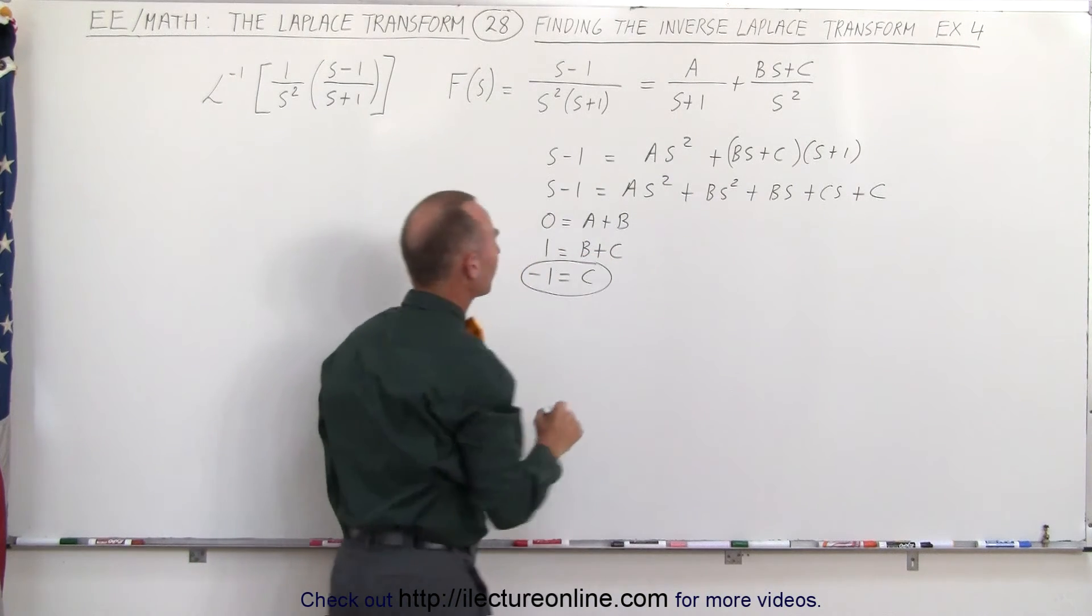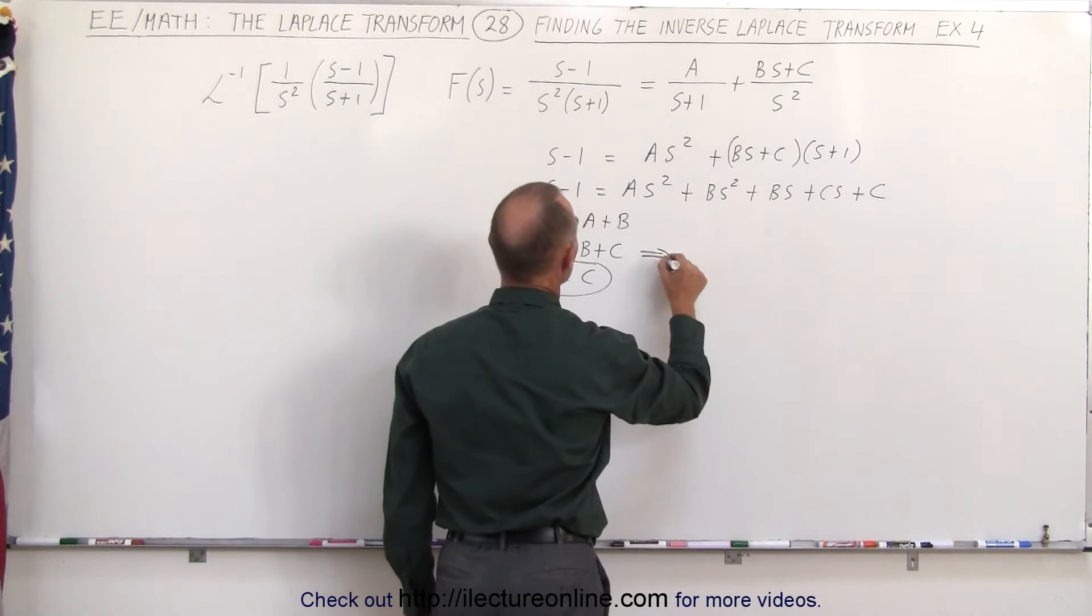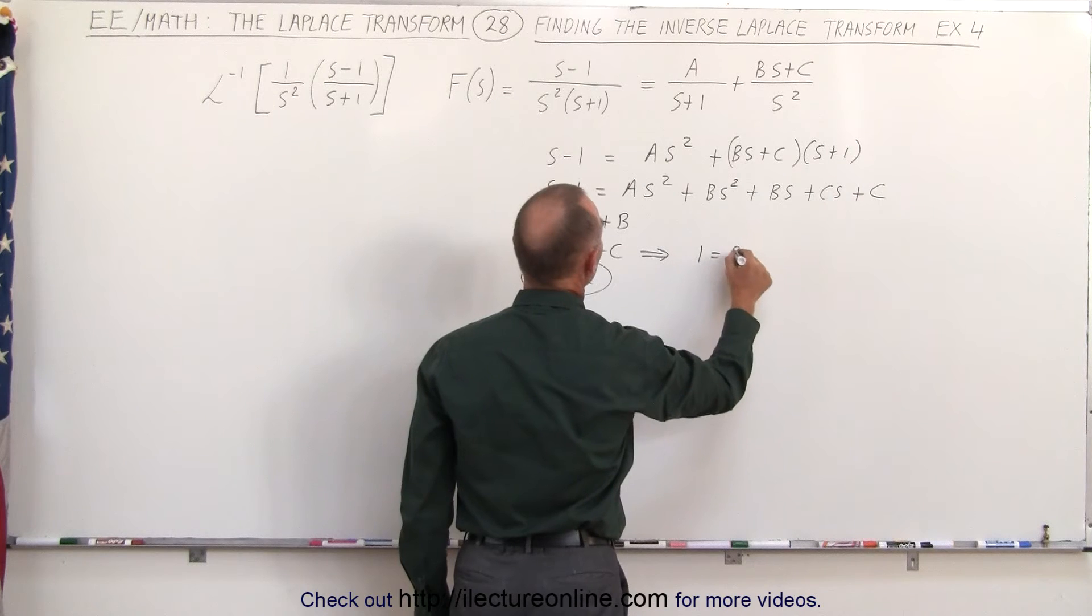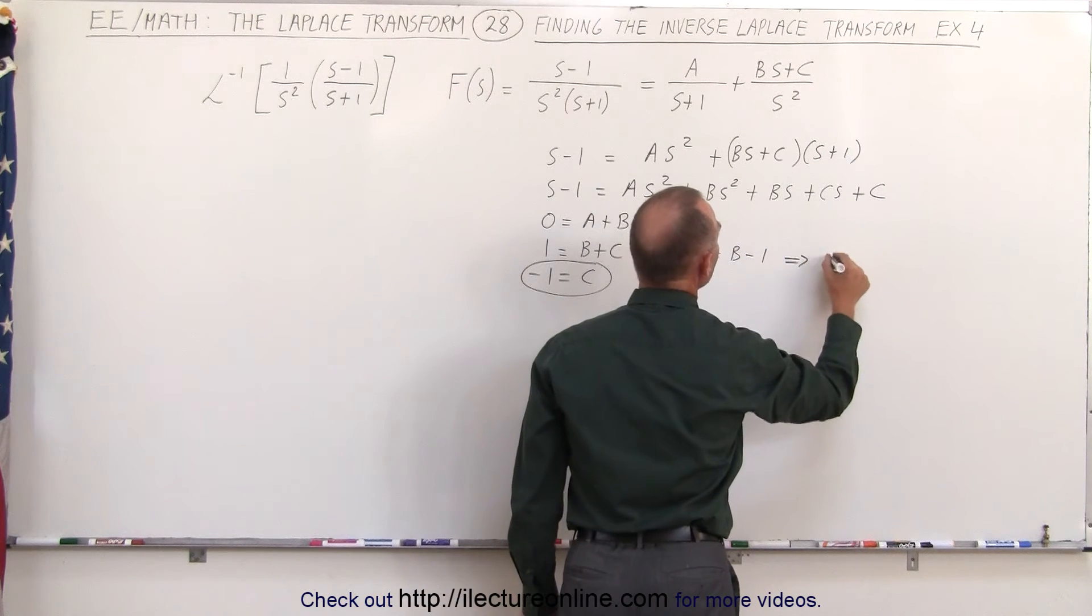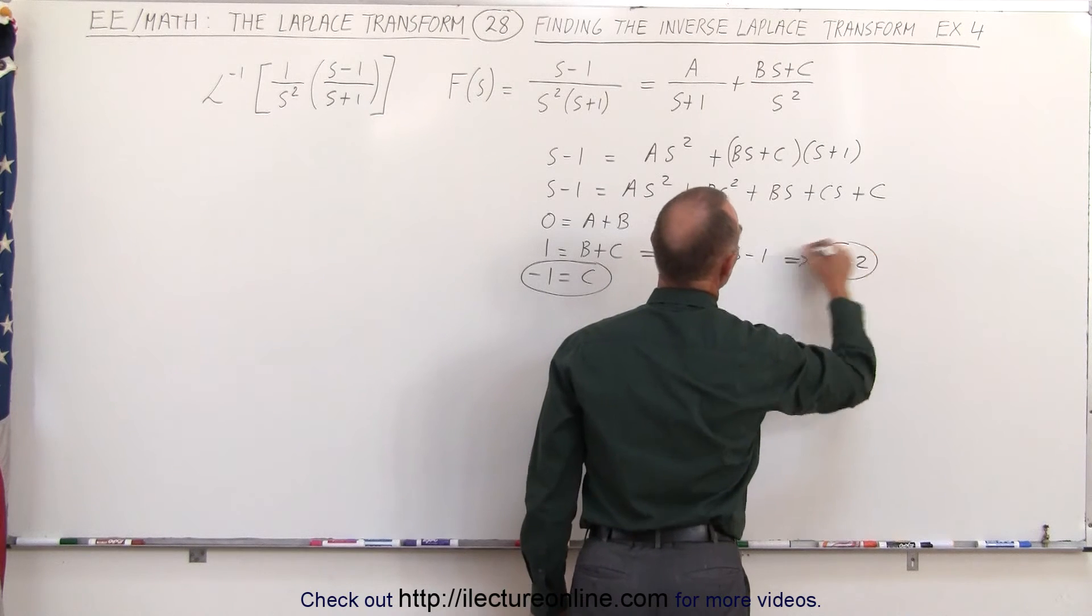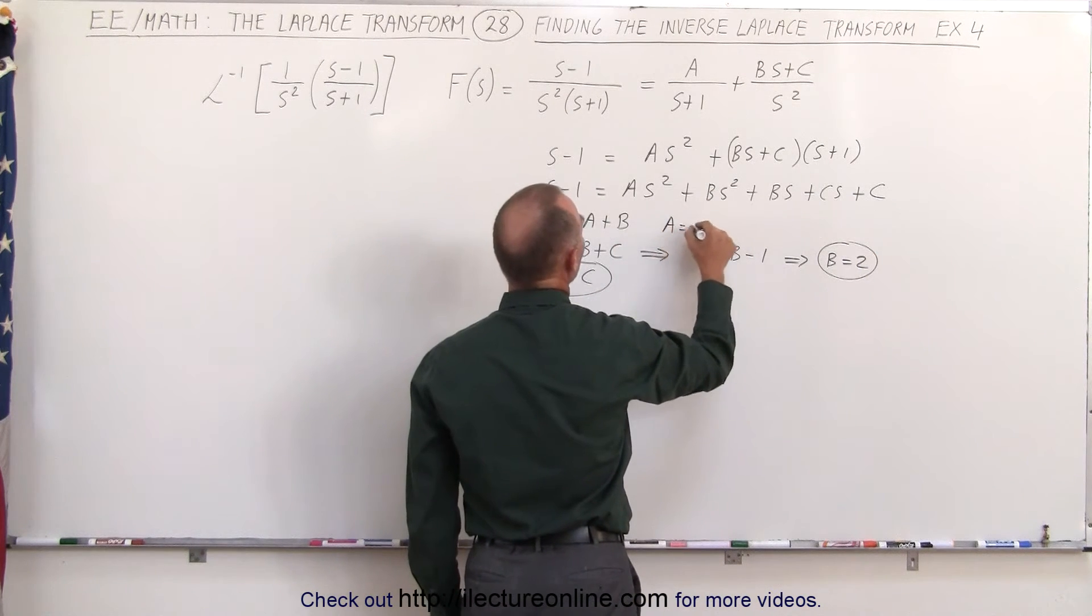Since C equals minus one, we can very easily find B. Using this equation here we have one equals B minus one. Move that across, we get B is equal to two. And finally, if B is equal to two, then A must be equal to minus two.